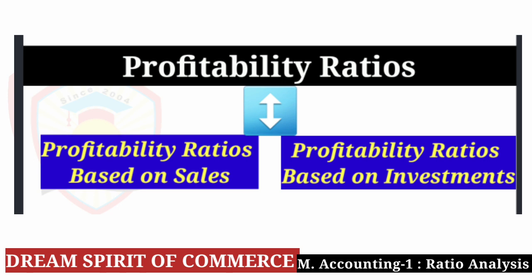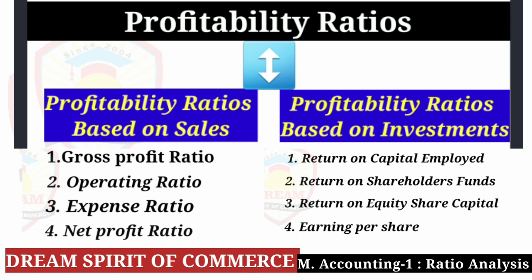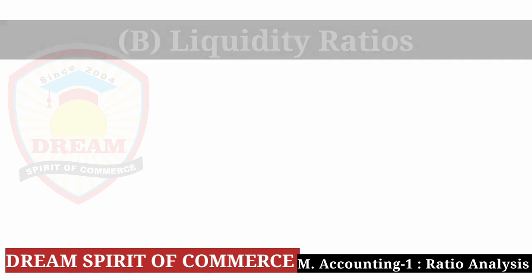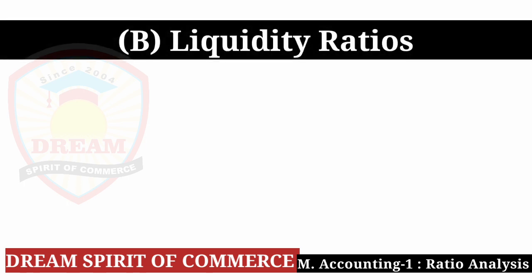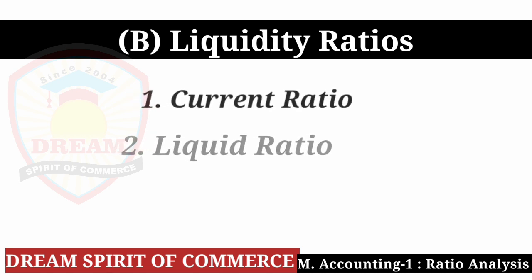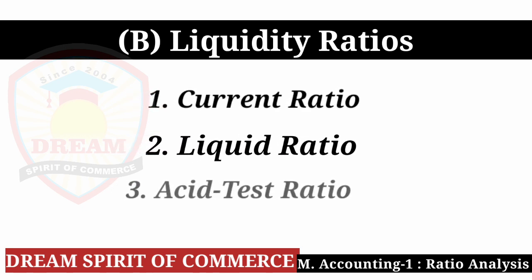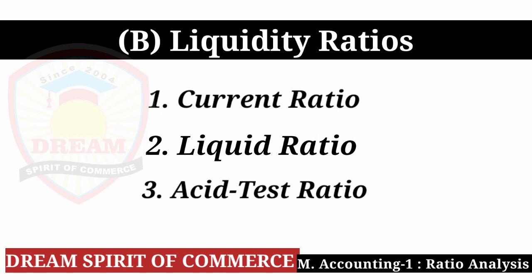Profitability ratio has two parts: first based on sales, second based on investment. Based on sales we saw four types of ratios: gross profit, operating, expense ratio, and net profit ratio. Under based on investment, and the third category is asset ratio.